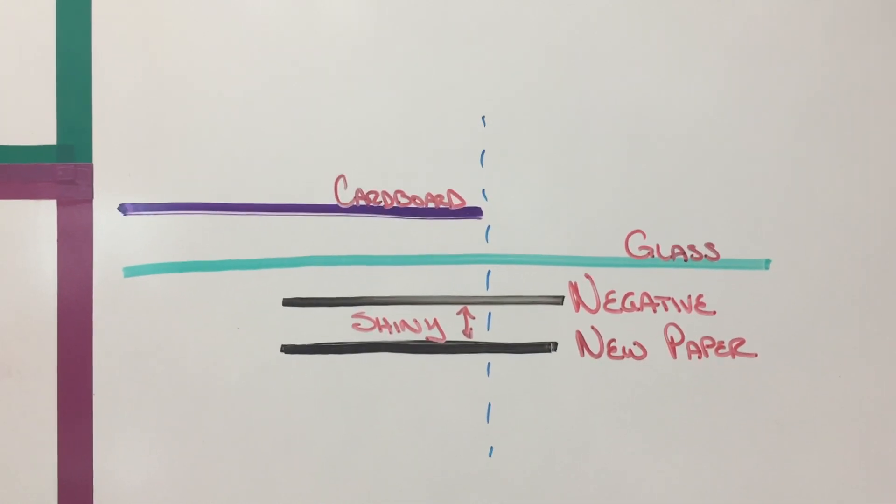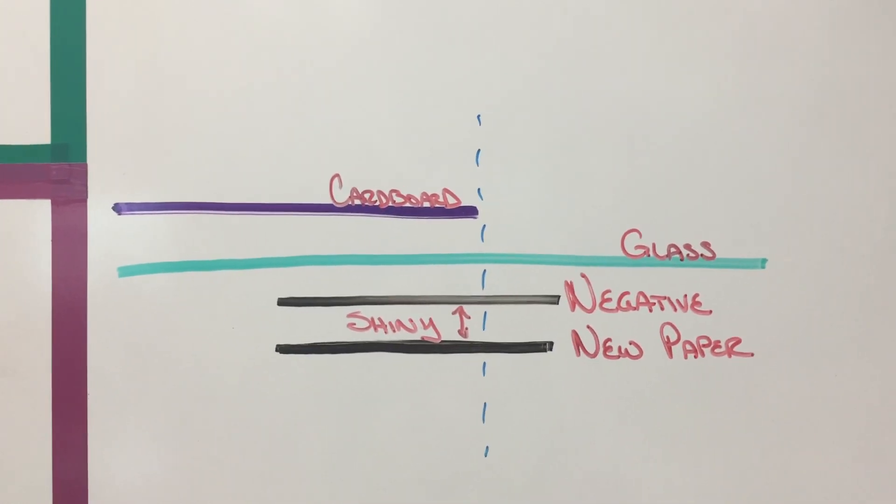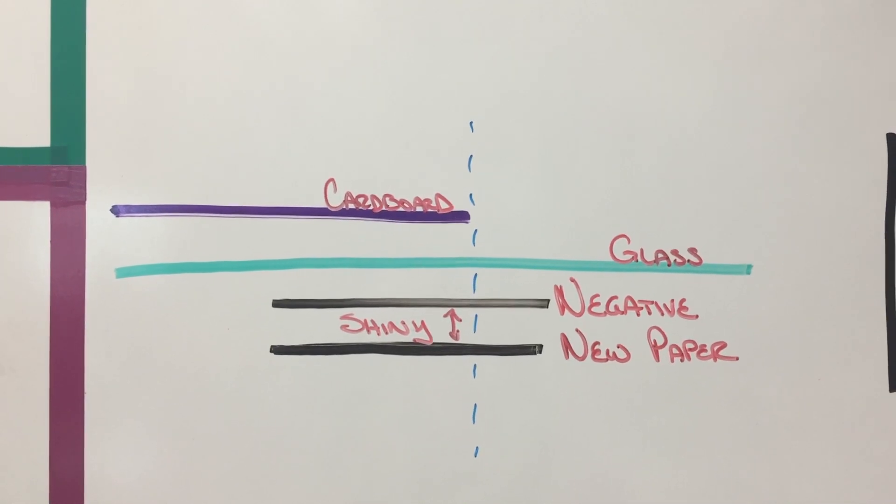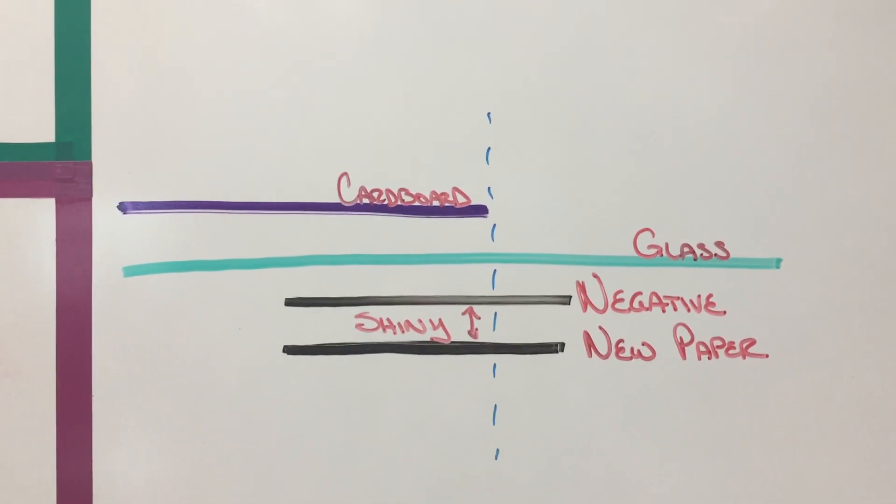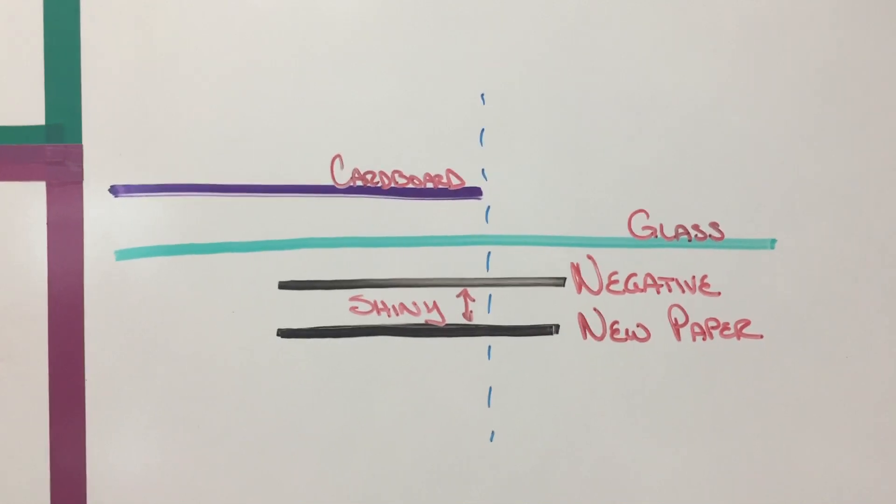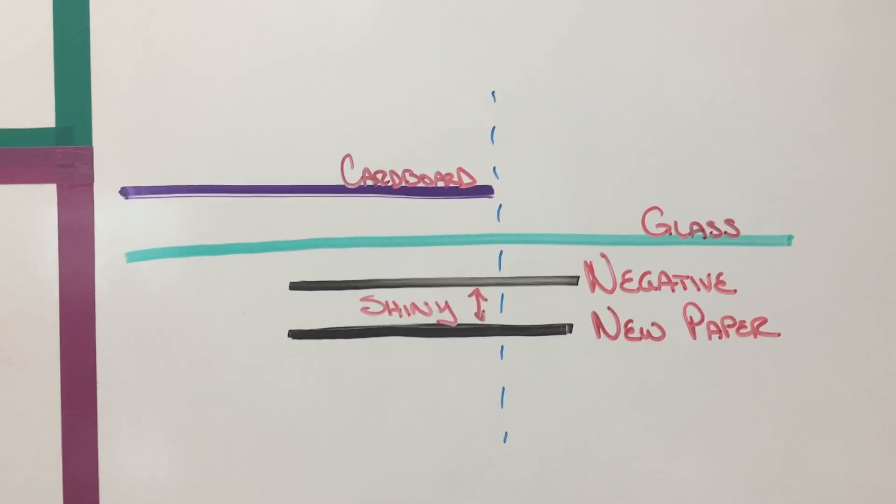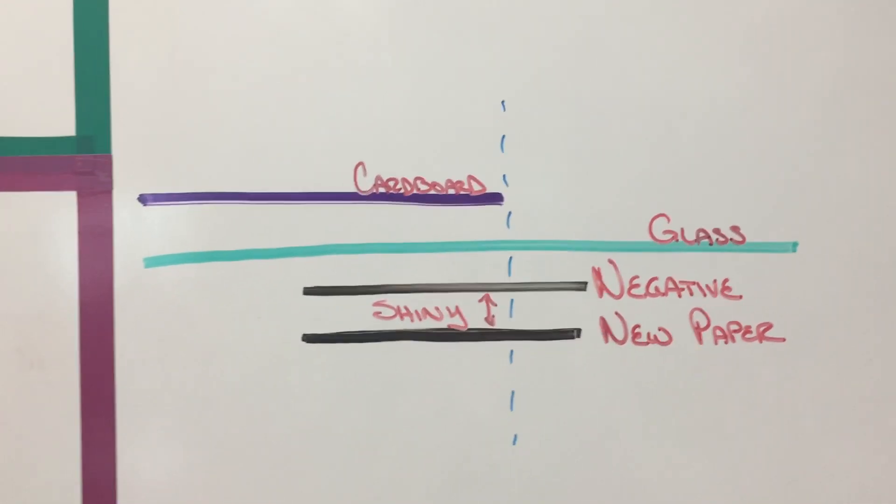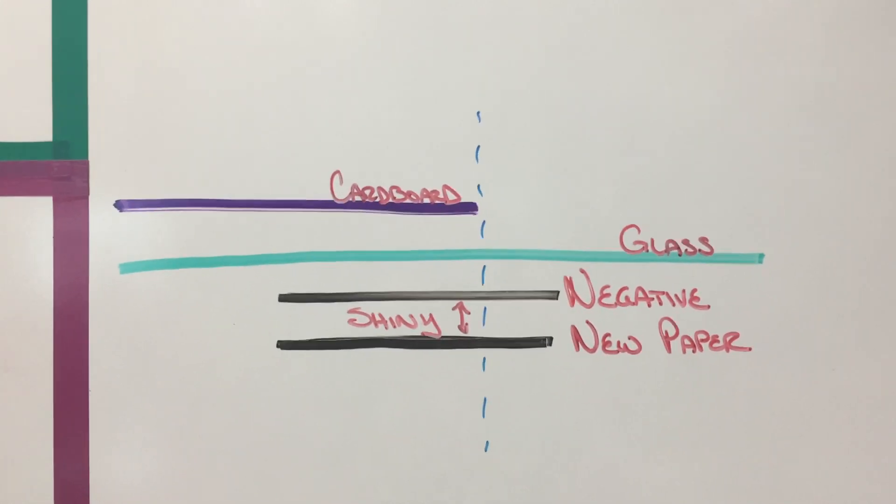So you're going to set things up like this and you might want to pause the video to write these things down or draw this out on some notes so that you have this in the darkroom. You're going to put your new piece of paper on the very bottom and I will show you this in the darkroom as well.